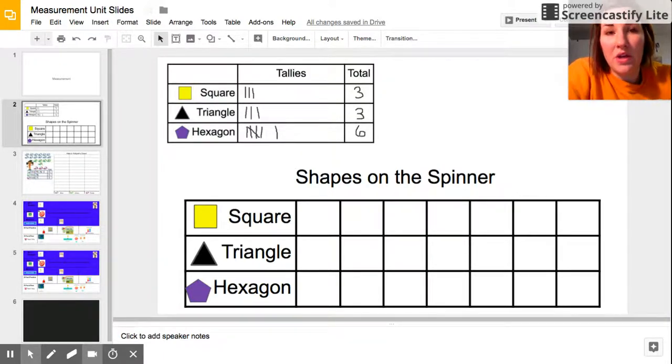In the last video we looked at collecting our data through a tally chart, and now we're going to take the tally chart and turn it into a graph. We're going to look at two different kinds of graphs today: one is making a pictograph or picture graph, and the other is a bar graph.